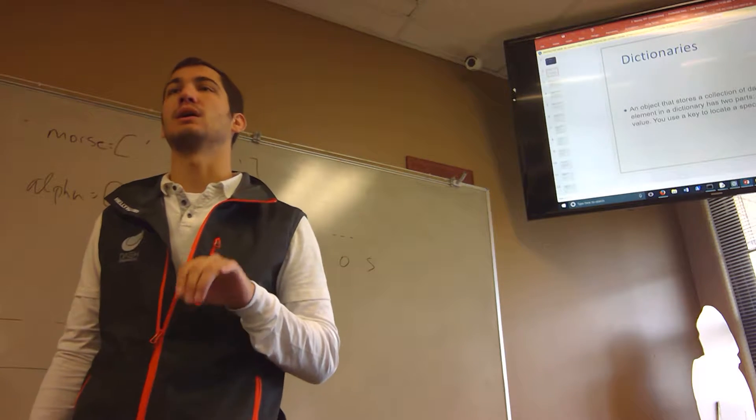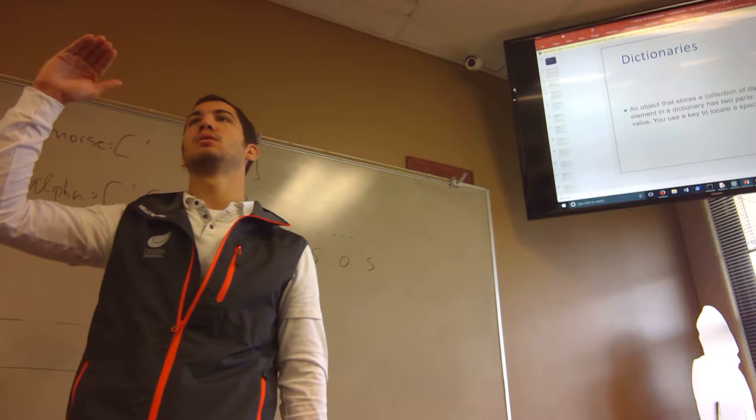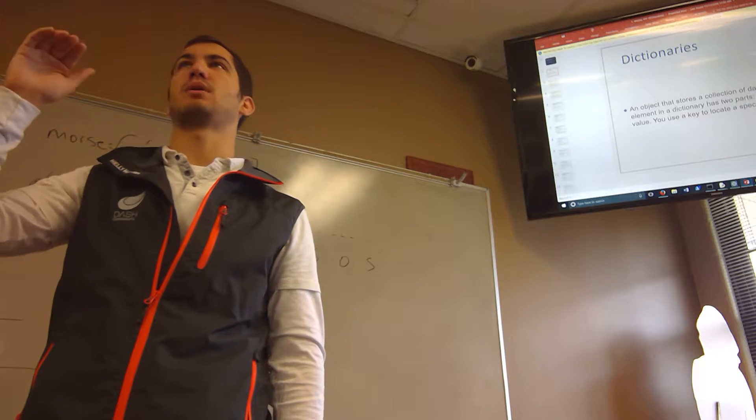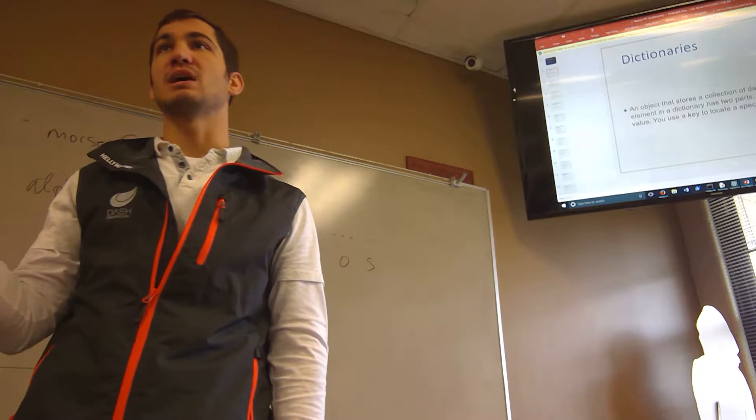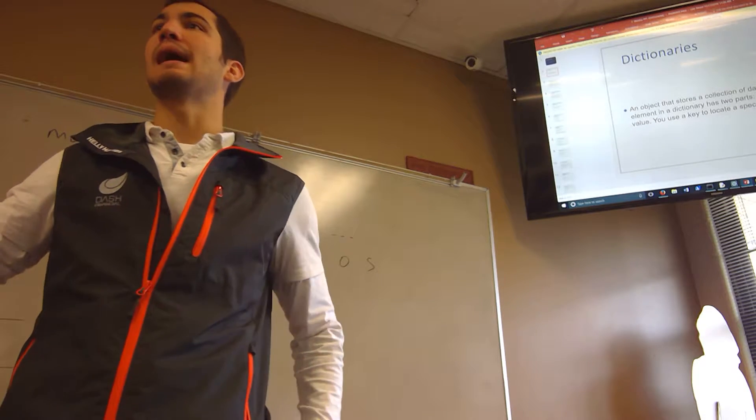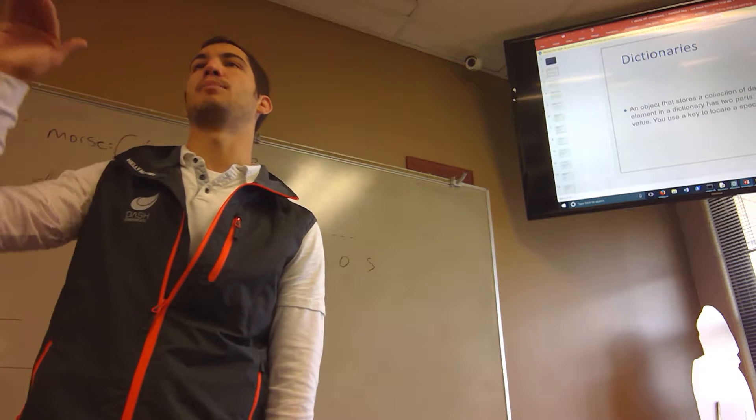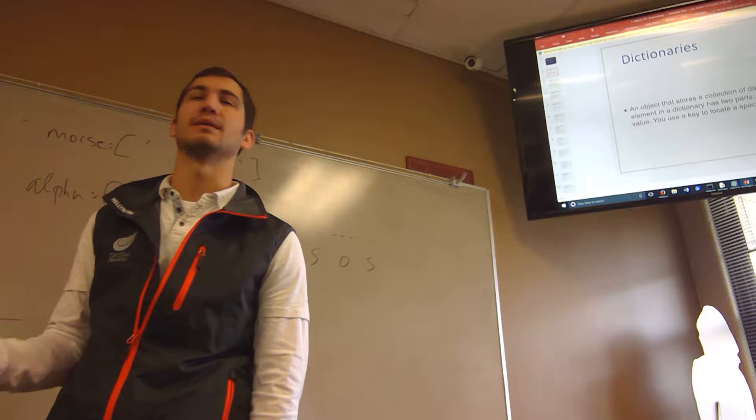So if I do apple, baseball, and carrot for my keys and then I have the values, it gets stored randomly. And when I display the dictionary it may do carrot, apple, baseball. It's like, no, that's not the order I want to display it in. Doesn't matter, it gets stored in a random order and you can't change that.